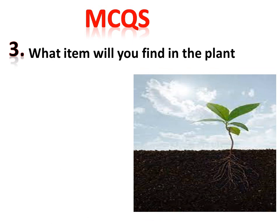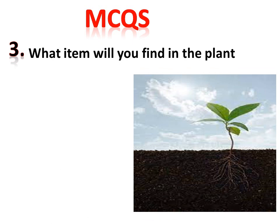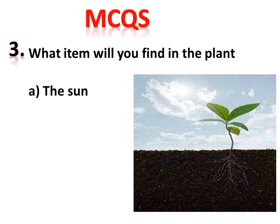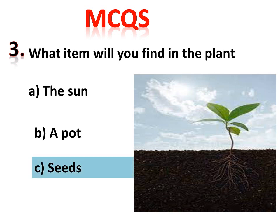MCQ number three: what item will you find in a plant? Option A is the sun, option B is a pot, and option C is seeds. The correct answer is seeds — a pot is not found in the plant, and neither is the sun. Seeds are the only item you find in a plant.